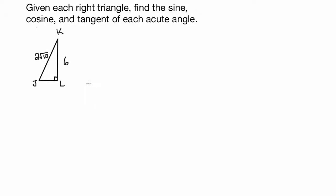Let's get a little more difficult now, and we'll find the sine, cosine, and tangent of each acute angle of the two right triangles. I would call this more of a medium difficulty.